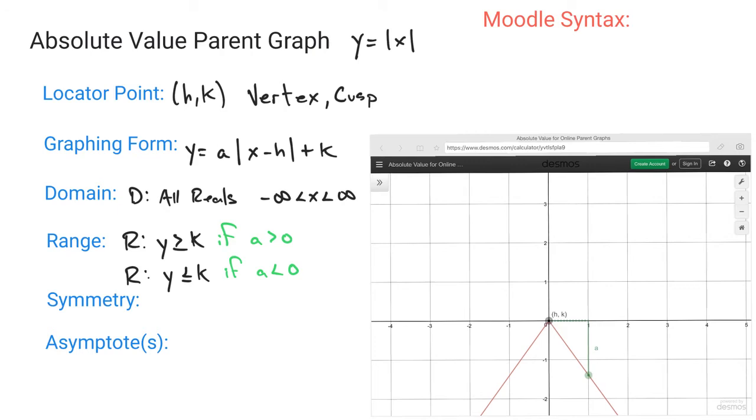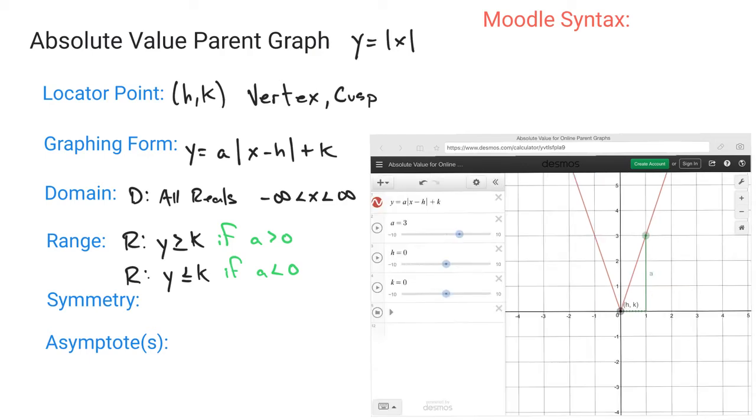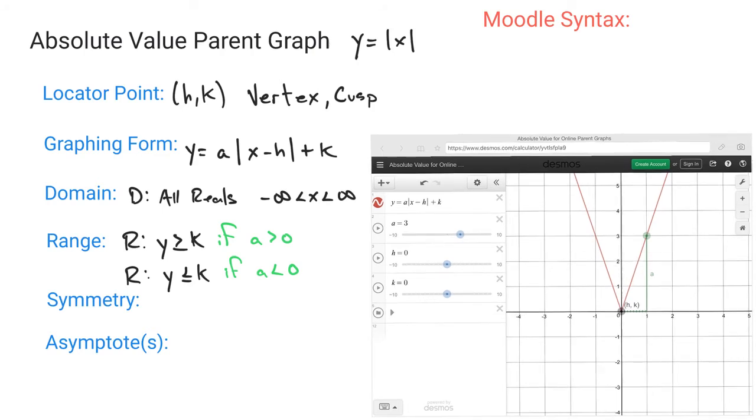So again, that A value is just whatever that distance is above that locator point H,K. So you can see here, this A value here is equal to 3, and you can see that in your actual equation. You can shift all of this around, and you can move it left, right, up, and down, and you can see how your H values change as that occurs. But the A value is always equal to 3, because if you move one to the right of your locator point, you would move up 3 in this particular scenario.